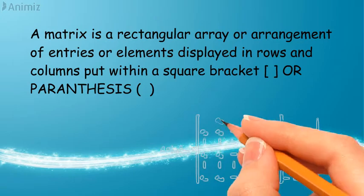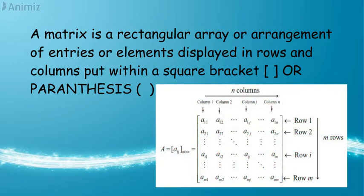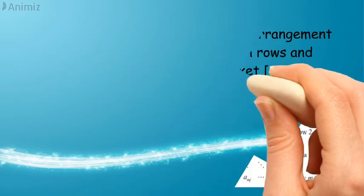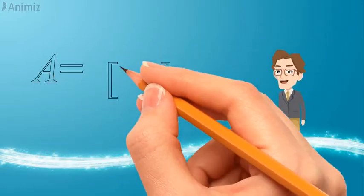This is the general form of the matrix. In subscript notation, the general form can be written as A equals aij, where i represents rows and j represents columns.